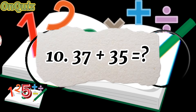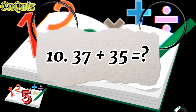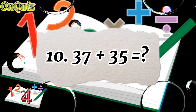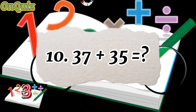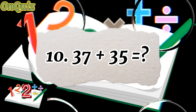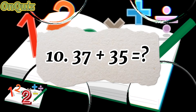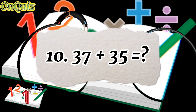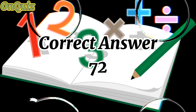Question 10. 37 plus 35 equals. Correct answer: 72.